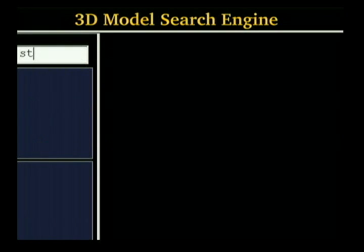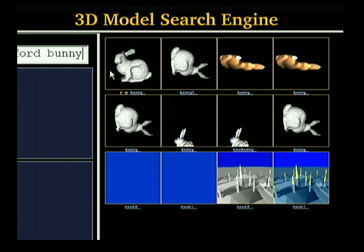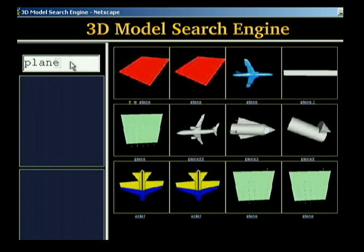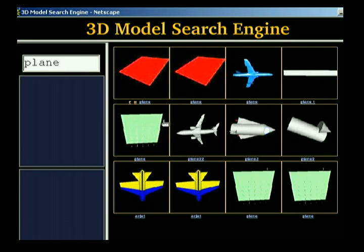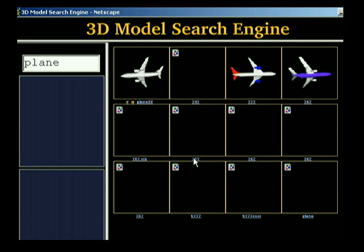At first, one might think that just text keywords are sufficient for most searches. However, there are many cases where text matching fails. For instance, if I search on the word "plane," I get back both airplanes and geometric planes. But if I search based on shape similarity, I get back only airplanes.